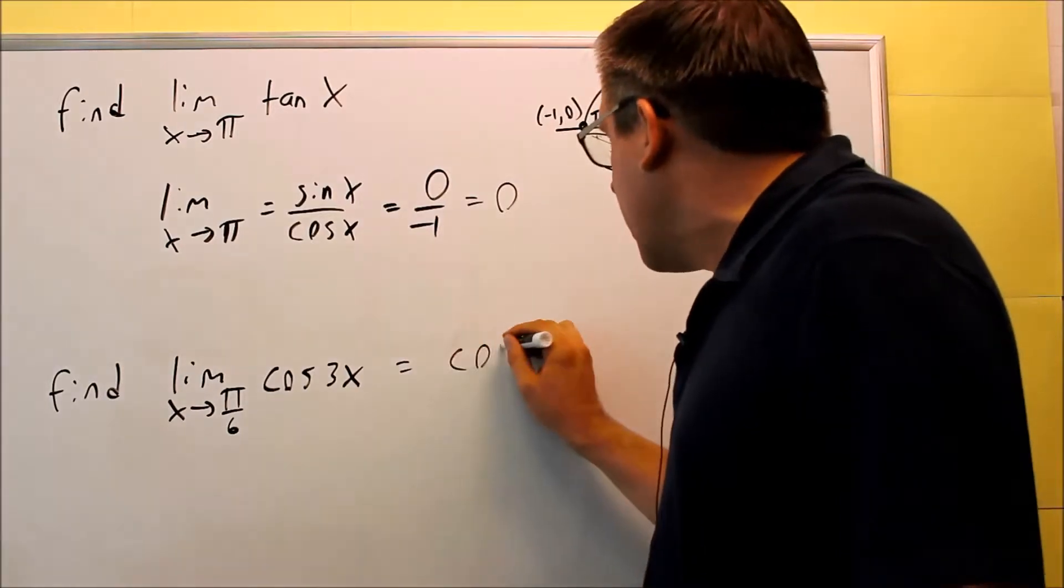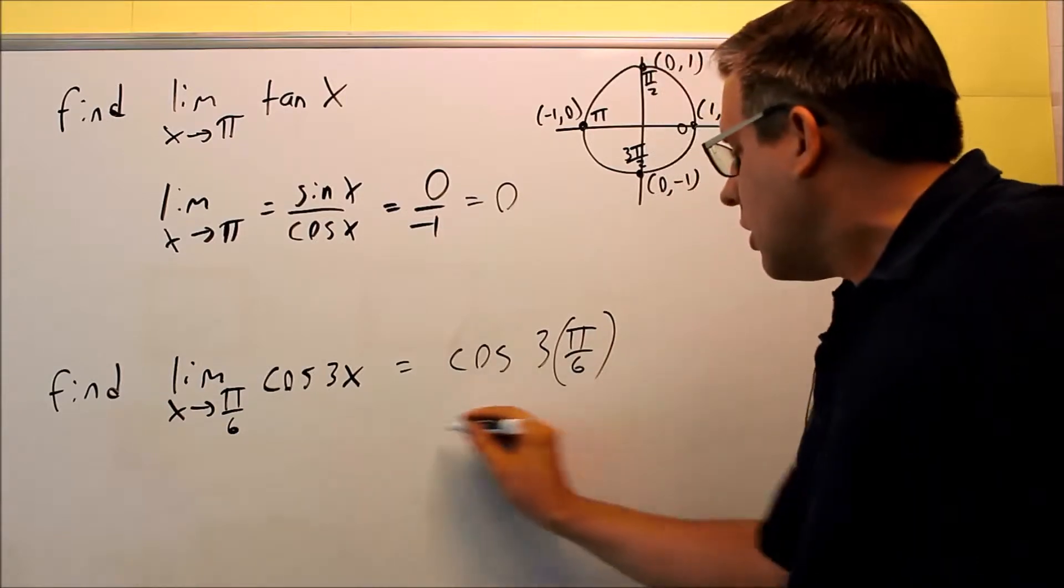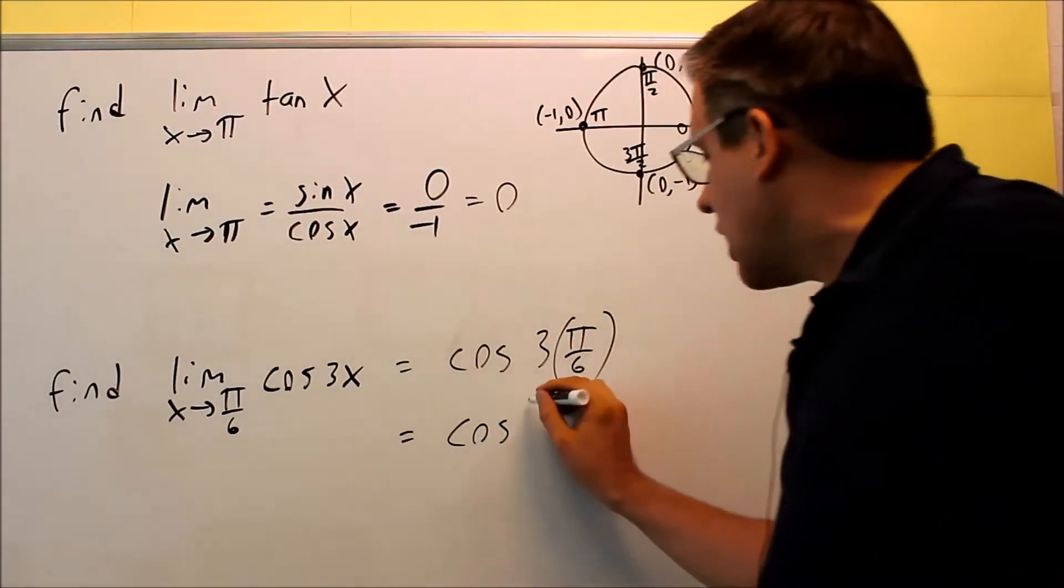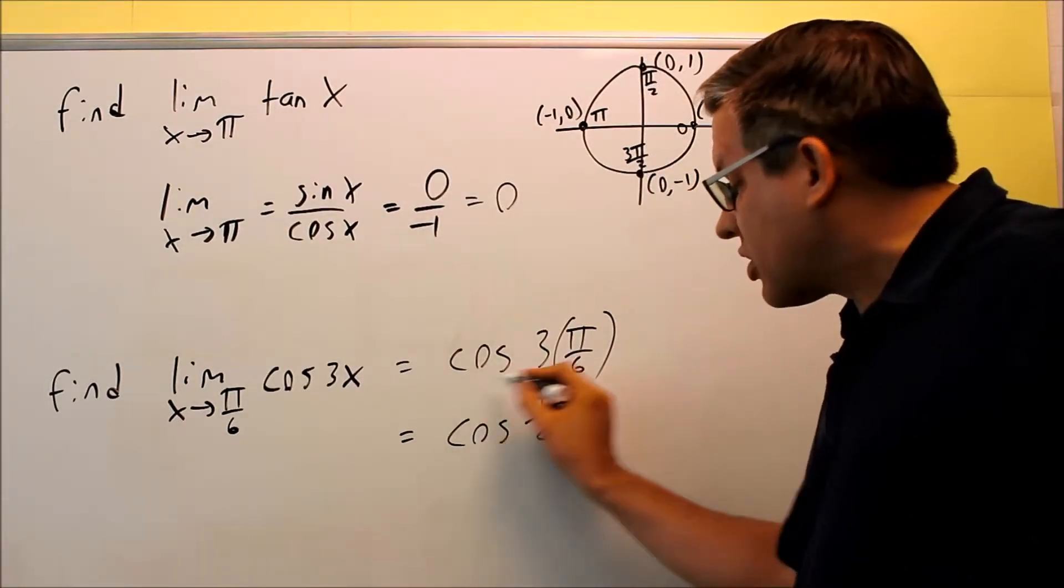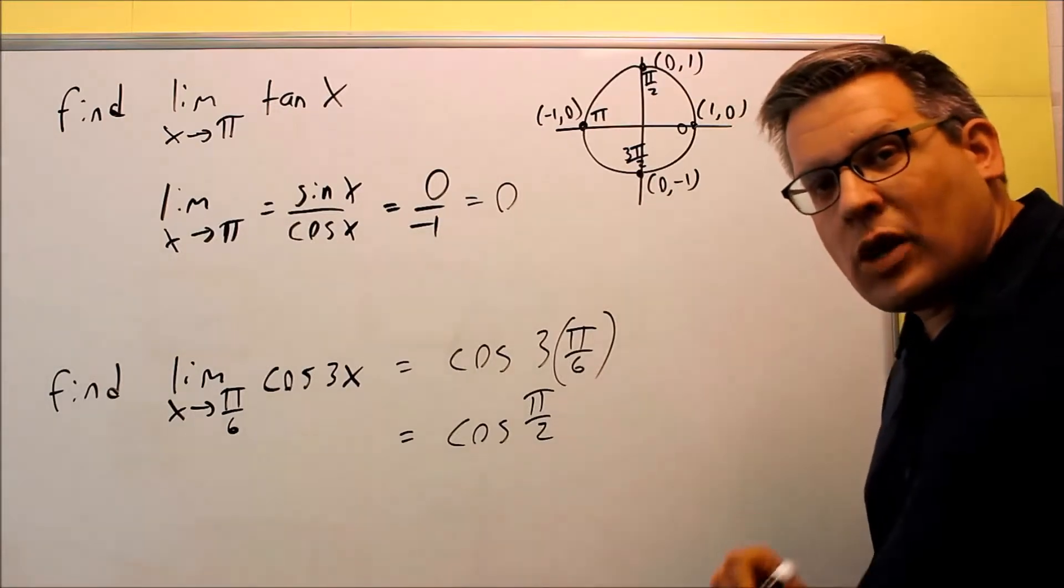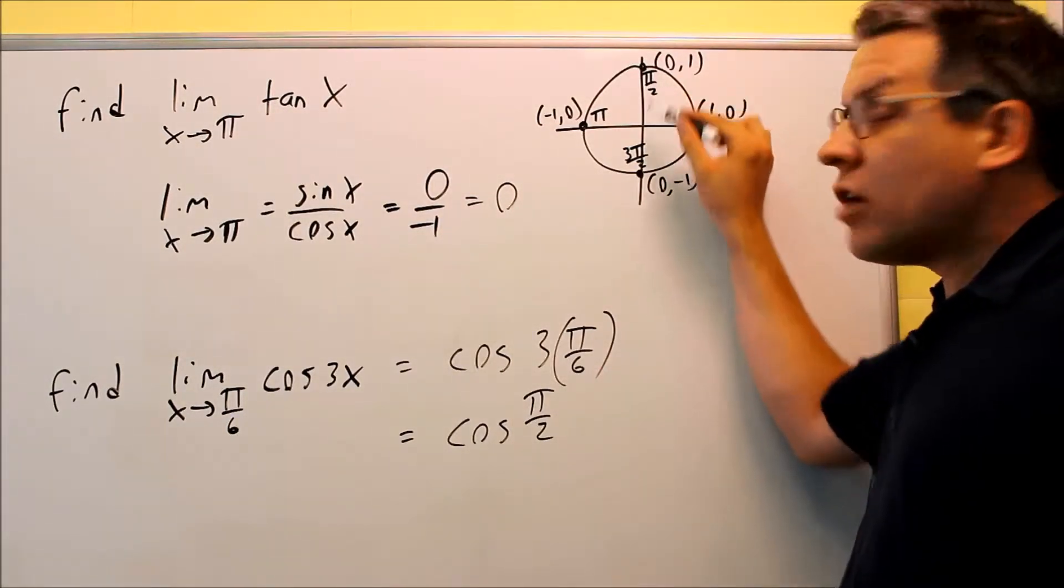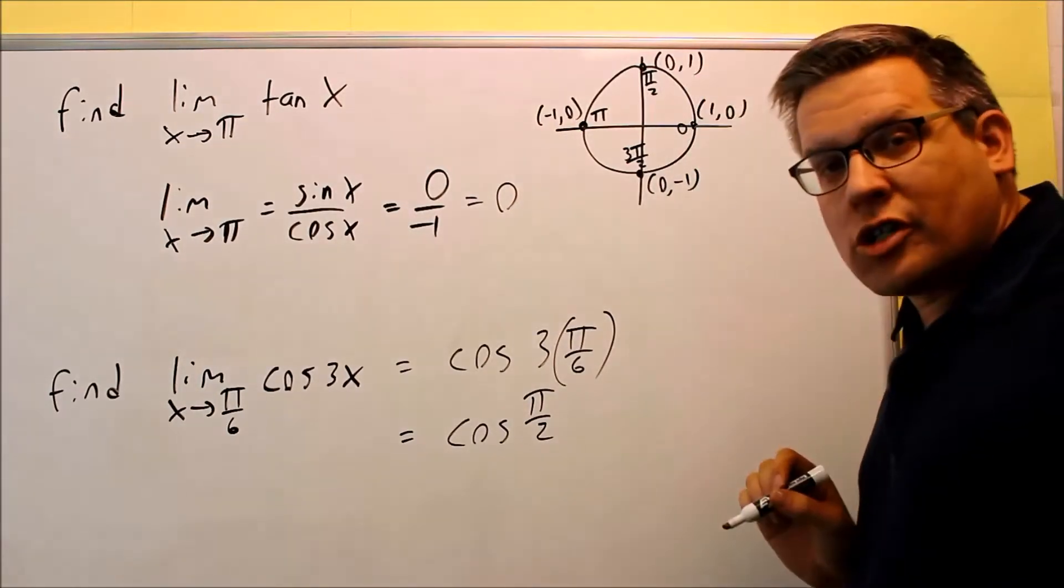So this is the limit. Actually, if we're plugging in the value, we can just go ahead and write it this way. We're going to do 3 times π/6, and then that's going to be cosine of, okay, 3 over 6 is going to end up giving us π/2 when we plug that in. Okay, so we want cosine refers to an x value. We want the x value at π/2. Here's π/2 on our unit circle. We want the x value. The x value there is going to be 0.